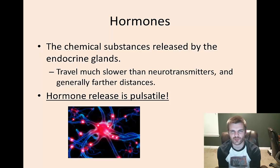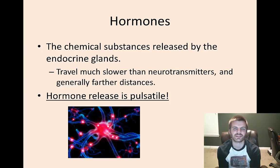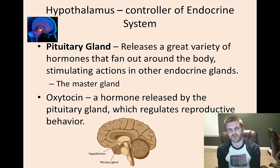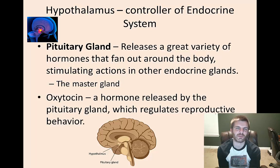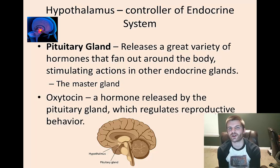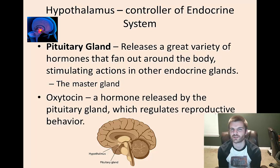The endocrine system releases hormones — chemical substances that are very different from neurotransmitters. Their release is pulsatile, and hormones travel much farther throughout the body and much more slowly than neurotransmitters, which are generally released in the brain. The connecting point between your brain and the endocrine system is the hypothalamus, your regulator of biological needs. It communicates with the endocrine system's master gland, the pituitary gland, which can release its own hormones or stimulate other glands to do so.